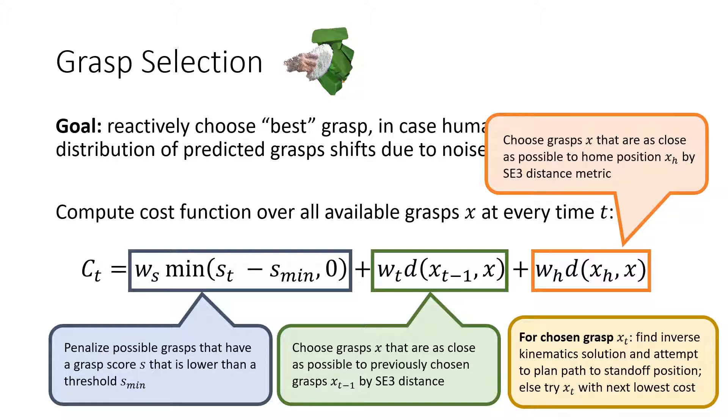Once we have a chosen grasp, we find its inverse kinematic solution and attempt to find a path plan. If any step in this fails, we retry with the next lowest cost.